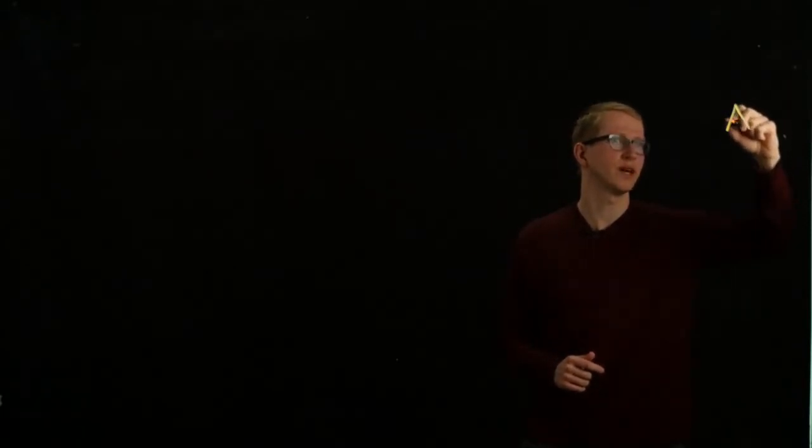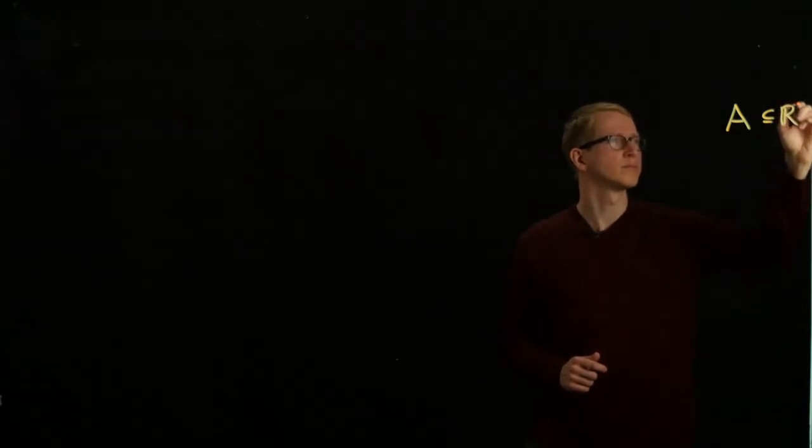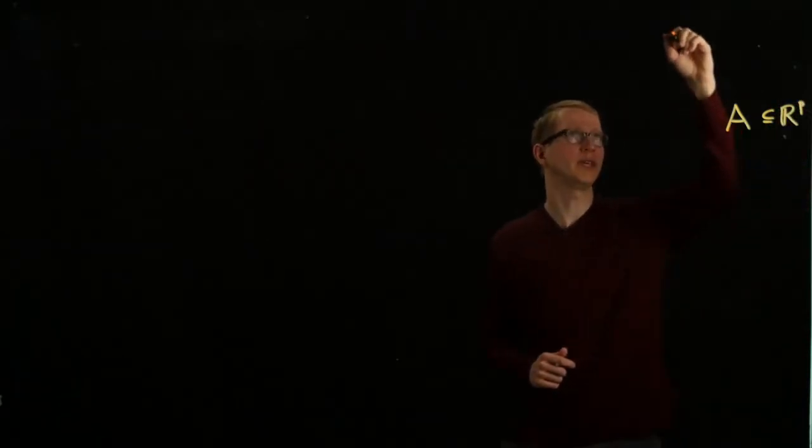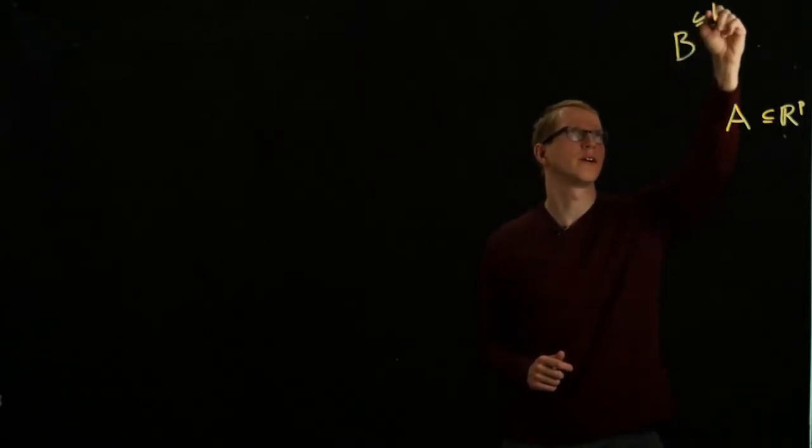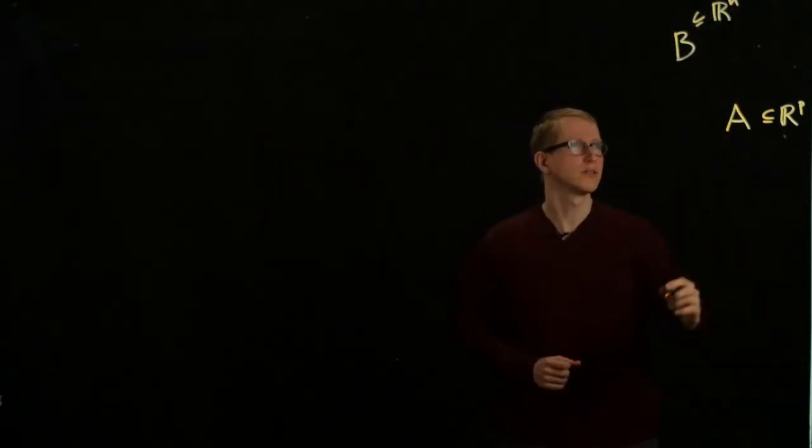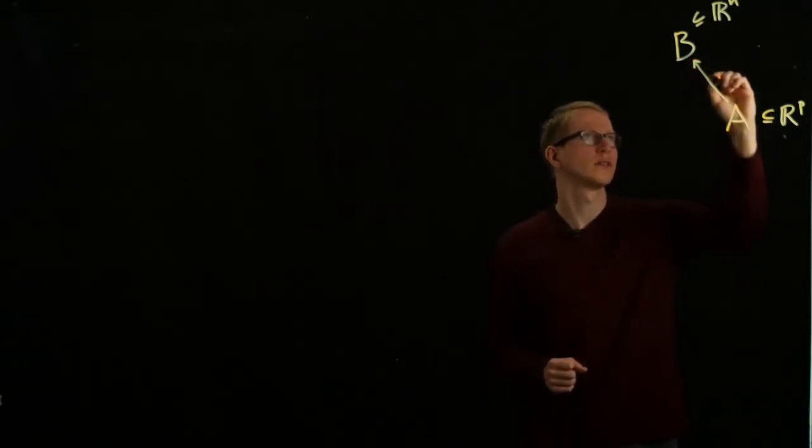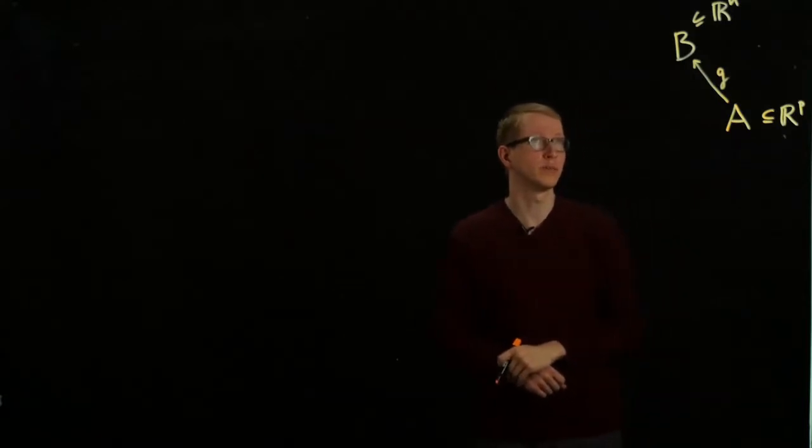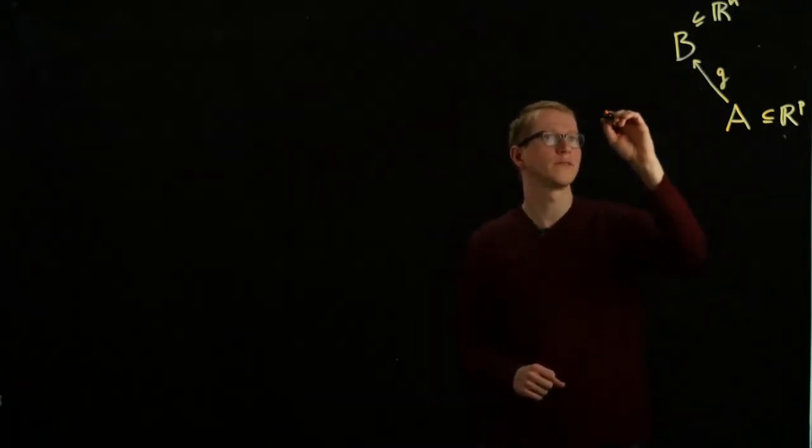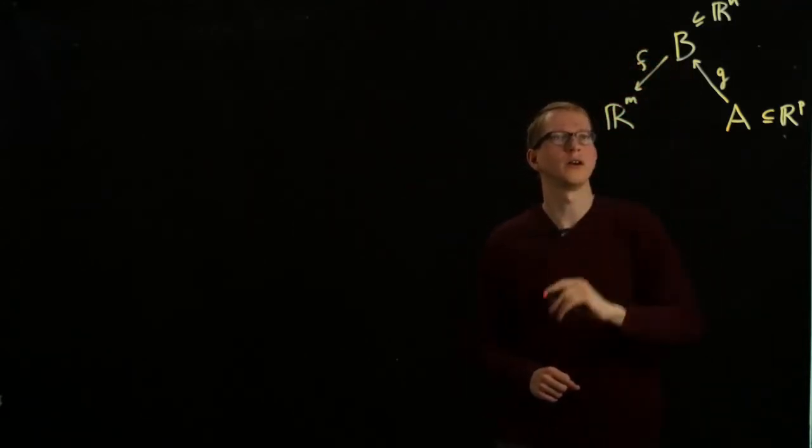Often, I like to think of these functions in terms of diagrams. If I have a subset A, and let's suppose that A is a subset of R^p, and I have B, which is a subset of R^n, I can look at a function from A to B, and I can also look at a function from B to R^m.